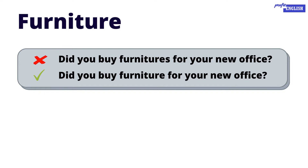Let's move on to the next word: 'furniture.' Consider the sentence 'Did you buy furnitures for your new office?' — is that correct? No, it is totally wrong. Furniture includes beds, chairs, cupboards, and tables, so it is always 'furniture,' not 'furnitures.' Example: 'He sold his old furniture.'